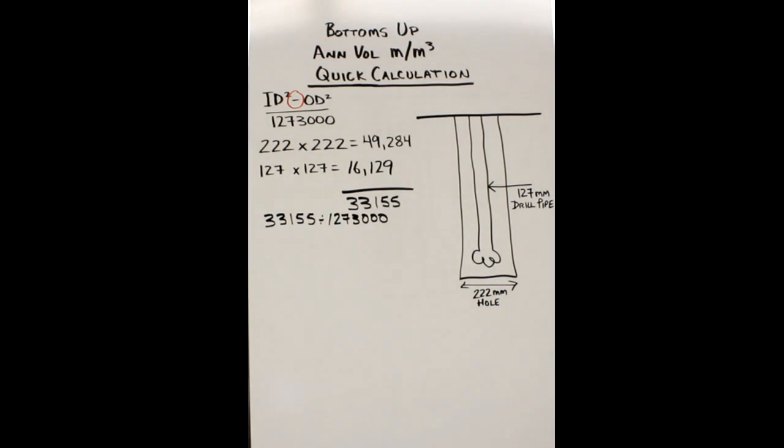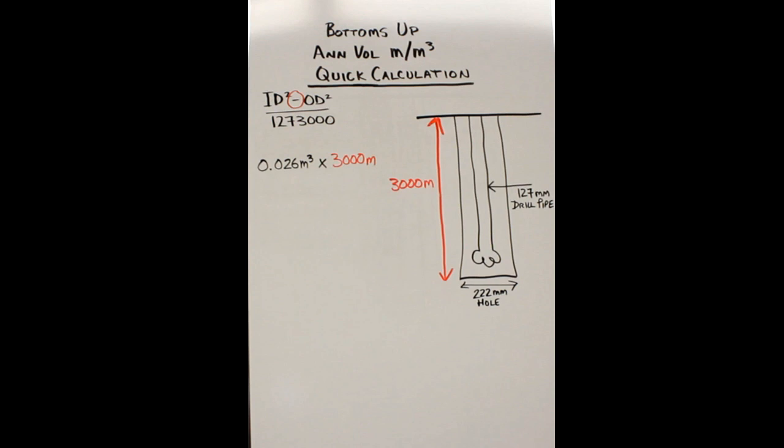Now take that number and divide it by the constant, 1,273,000, and we get 0.026 cubes per meter for our final answer. But wait, we are not finished yet, because we need to take our number and multiply it by the total length of the pipe in the hole.